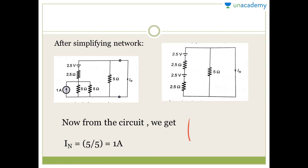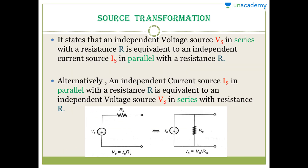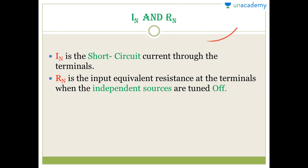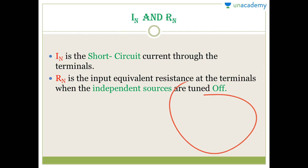In this way you can easily solve and find I_N. One more thing: if Thevenin theorem elements are given and you need to find Norton theorem elements, just remember that R_N equals R_th. And for finding I_N, you write V_th divided by R_th, which is the same as R_N. In this way you can easily find out the Norton equivalent from the Thevenin equivalent.